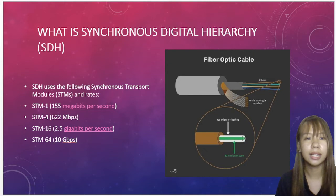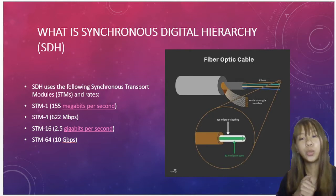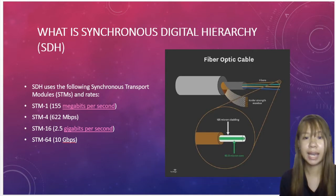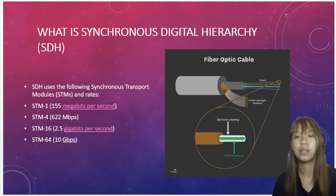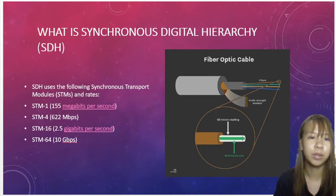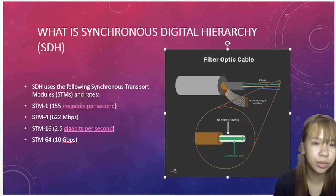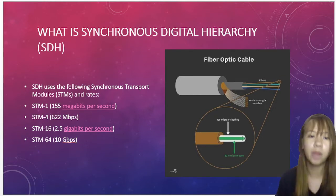SDH uses the following Synchronous Transport Modules or STMs and rates: STM-1 at 155 Mbps and STM-4 at 622 Mbps. This is a sample of fiber optic cable, which is composed of the Kevlar strength member, 125 micron cladding, and 62.5 micron core.